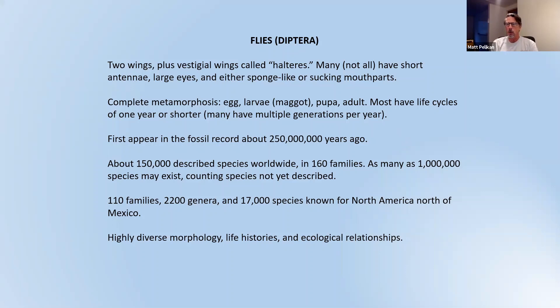Flies carry out complete metamorphosis, which is ecologically a really important thing about any group. They have a larval form that hatches from the egg, and the larval form really can't do much except eat. They're not very mobile and don't have very differentiated body parts — they're pretty much just eating apparatuses. When they reach maturity, they pupate, and after a little while the adult fly emerges and starts the cycle again. An old order of insects, 250 million years old with the first appearing in the fossil record.